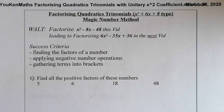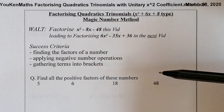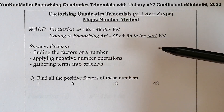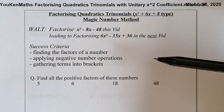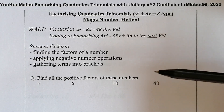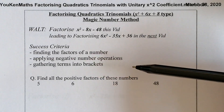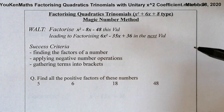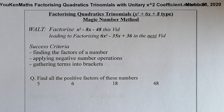The success criteria for this session is that you need to be able to find factors of numbers, apply negative number operations — adding, subtracting, multiplying, dividing negatives — and gather the terms into brackets, which is quite simple once we get going.